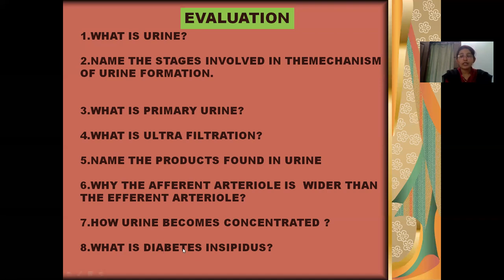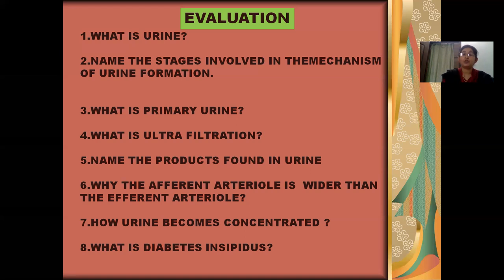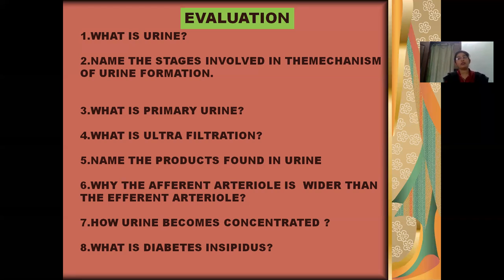Last question: What is diabetes insipidus? It is the condition in which the human being cannot produce vasopressin. Due to the absence of vasopressin, the urine cannot turn concentrated and the person excretes diluted urine. Such a condition in the person is called diabetes insipidus. I hope you have understood today's class. Once go through the content in the textbook and try to answer these questions again on your own. Thank you — I'll meet you soon in the next class with a new topic.